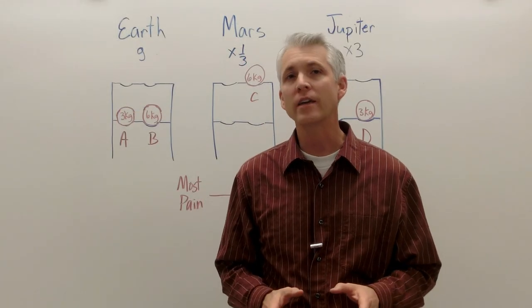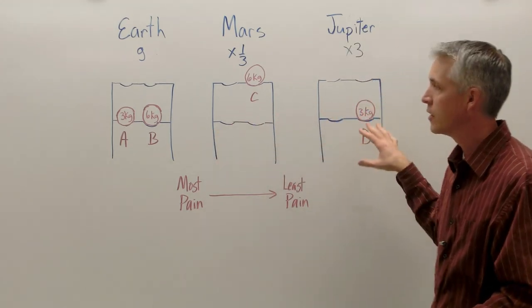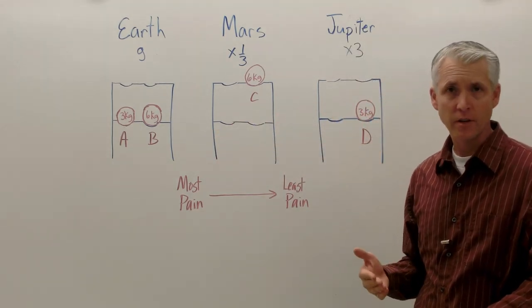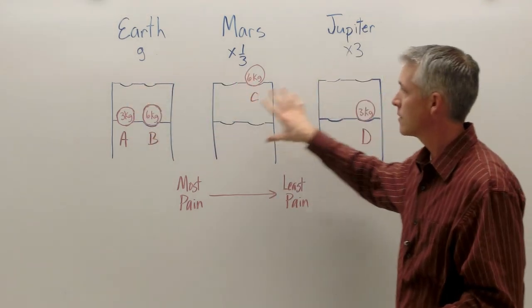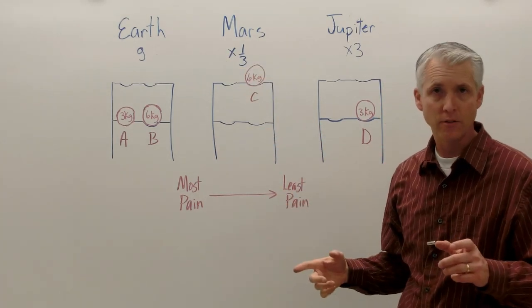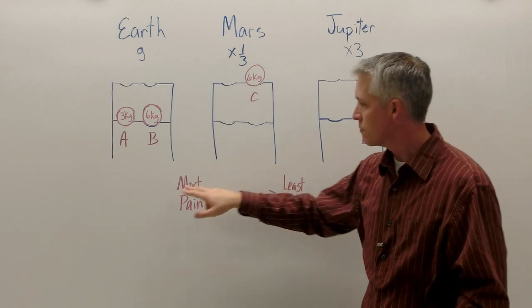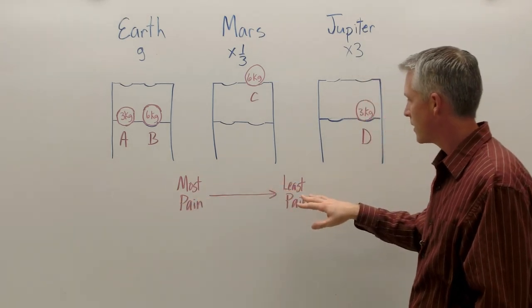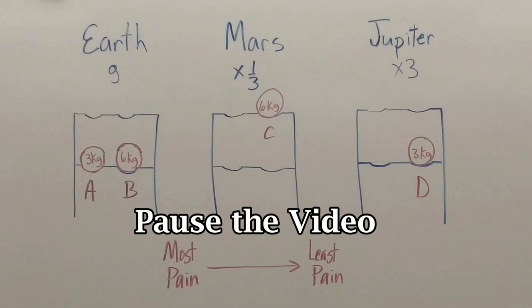So I want to give you what I call a ranking task, which is a situation where you have some different scenarios, and I want you to put them in order based on something. In this case I have bowling balls on different planets, different height of shelves on the rack, and also a couple of different masses of the bowling ball. I want you to rank them based on what has the most pain down to what has the least amount of pain if it were to slip off of that shelf and land on your foot. So pause the video for a minute and put them in the order that you think they ought to go, most pain down to least pain.